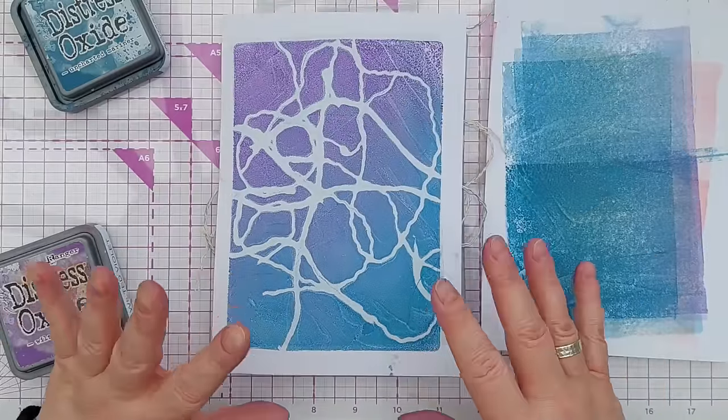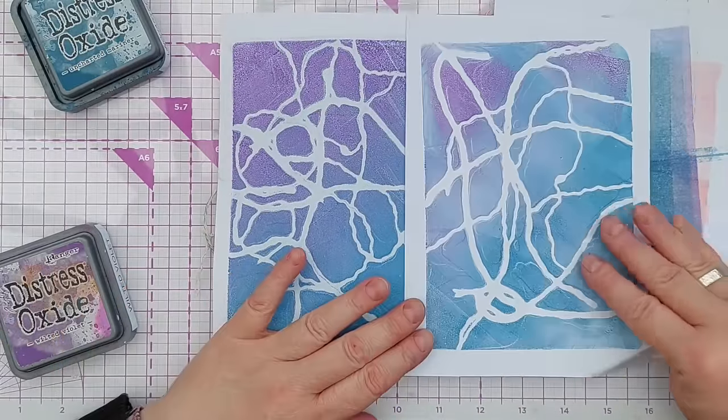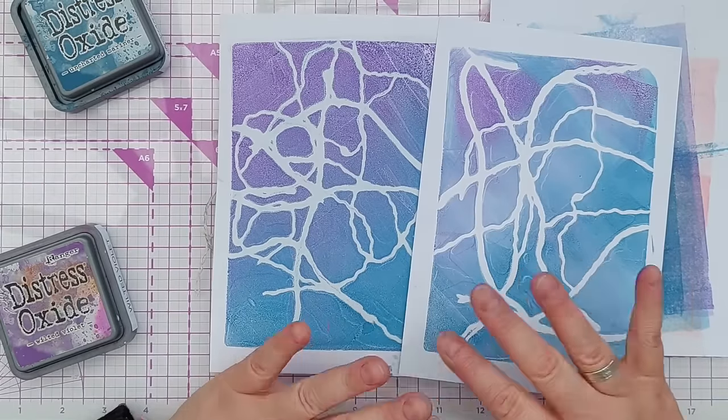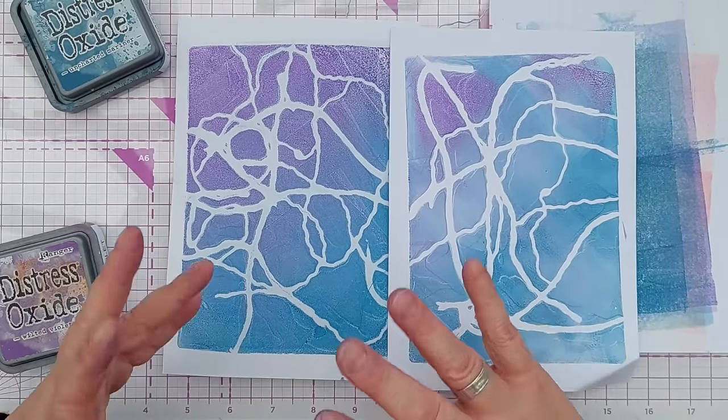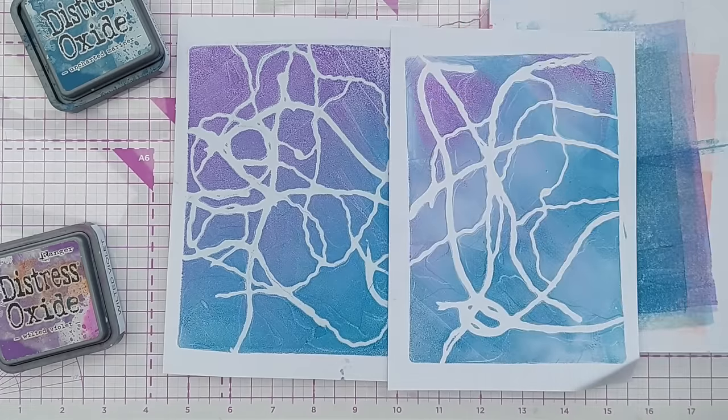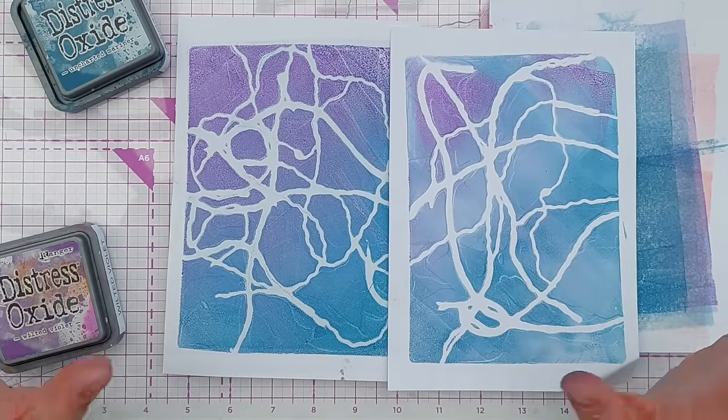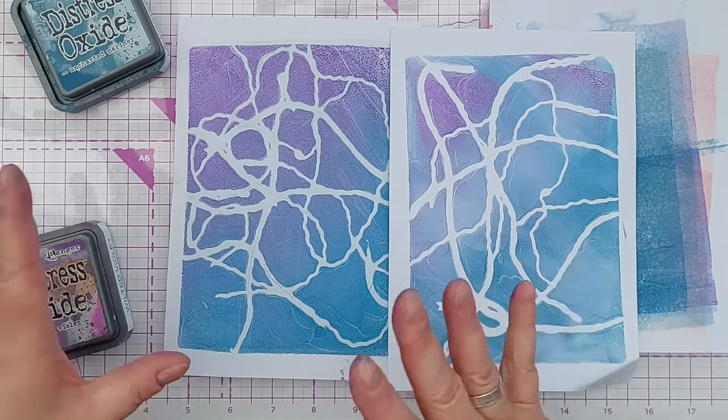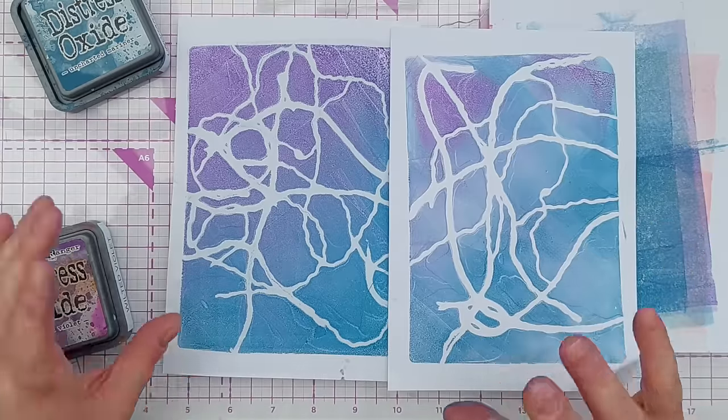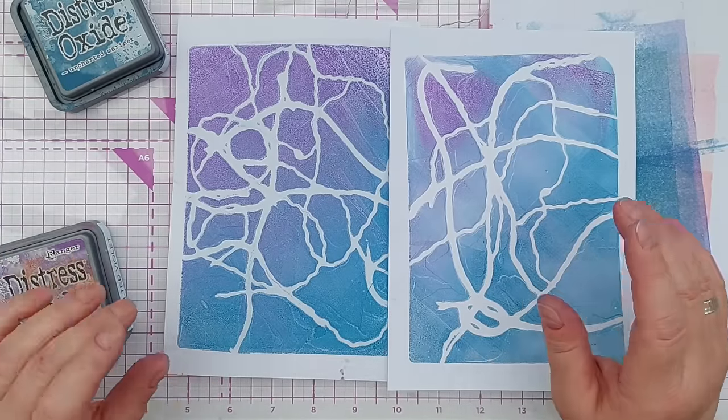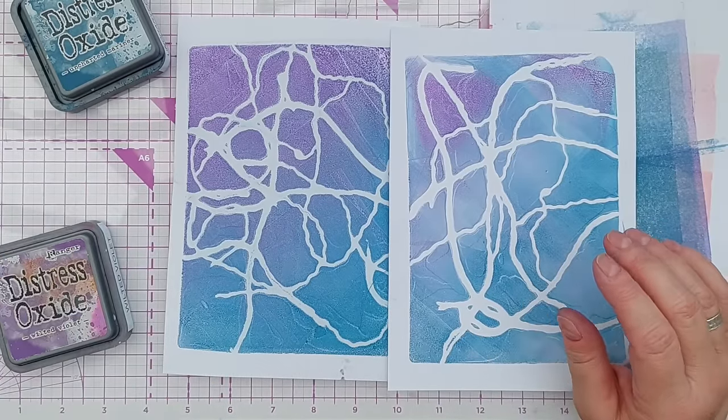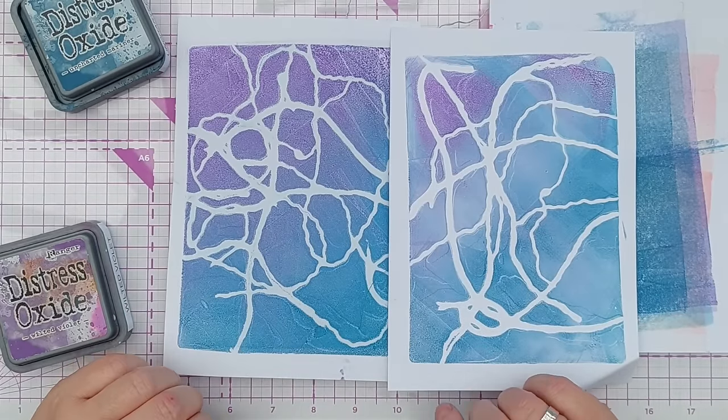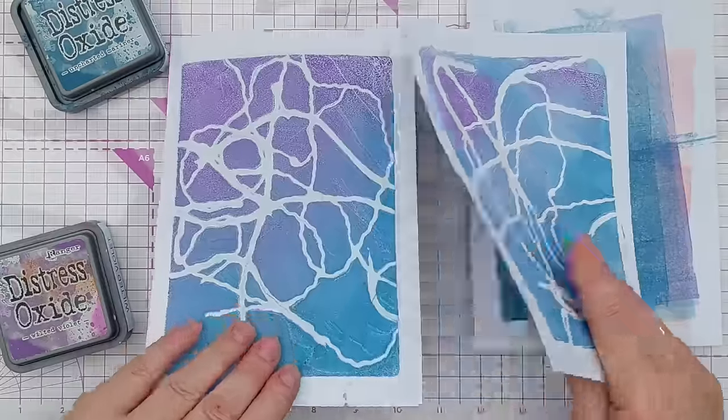And now very similar to this one but it's not so stark white because we put two layers of speckled egg down first. So you can print and then do another print on top if you want to introduce different colors in different layers. And the good thing about distress oxides, they do layer really well. They have an opacity to them because of the pigment ink and the other bits and bobs that are in there. So the wilted violet and uncharted mariner will layer really nicely on top of the speckled egg.